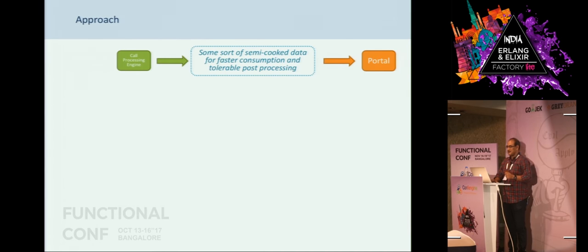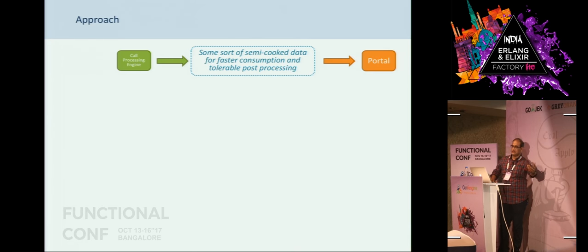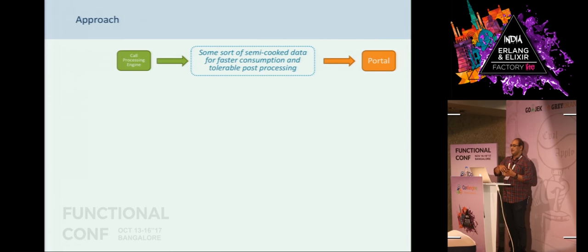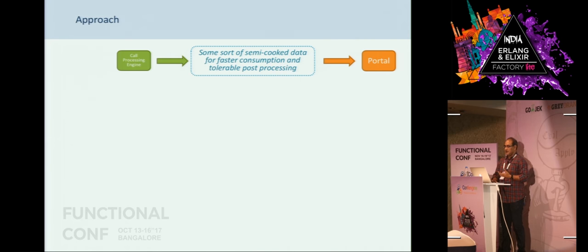So we came up with a certain approach: why don't we take the events from the call processing engine in real time and take these call processing events and create a sort of semi-cooked data which can be used to generate reports further on? It is typically like how Indian restaurants work — when you go to a menu you see 300 items, but typically they all come from 4 or 5 base preparations. So it is about making semi-cooked data from which we can pull out all the reports for the portal.